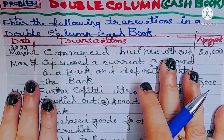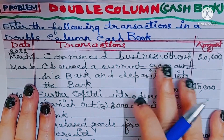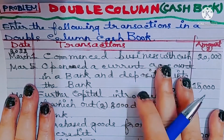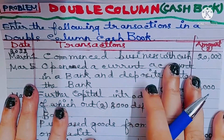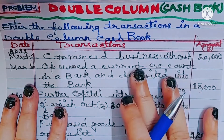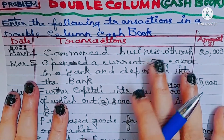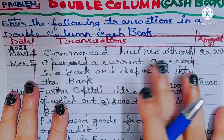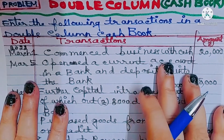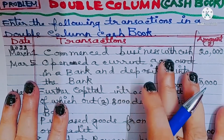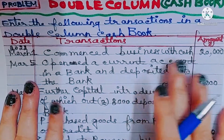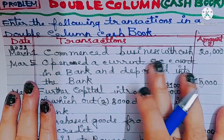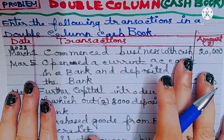What are the two types of contra entries? One is bank account debit to cash account, and the other is cash account debit to bank account. Apart from these two, no other entries are contra entries. Only cash account and bank account interact in contra entries. Since there are two columns in this cash book — cash column and bank column — we need to identify which column to use.